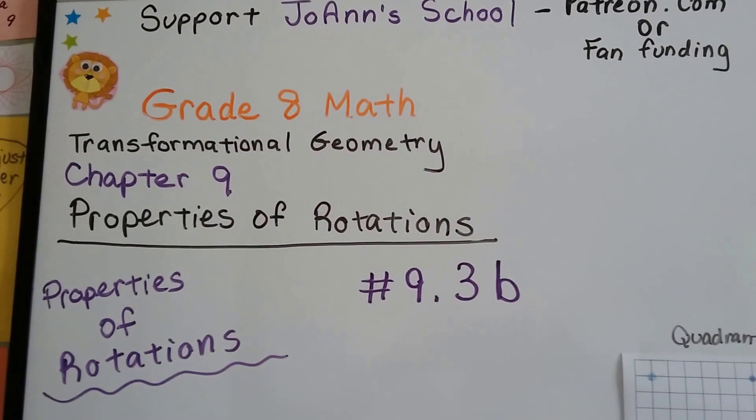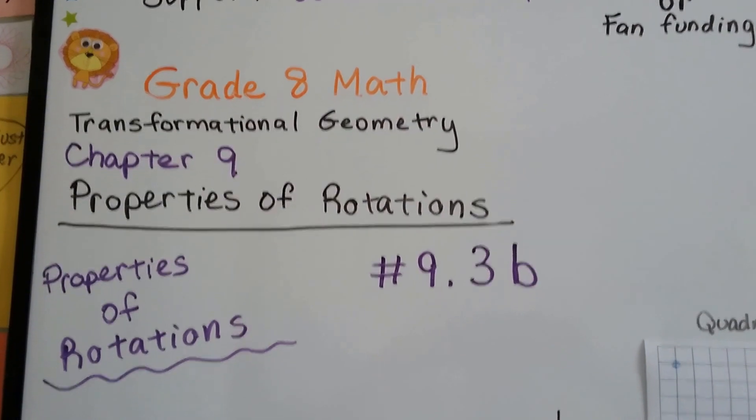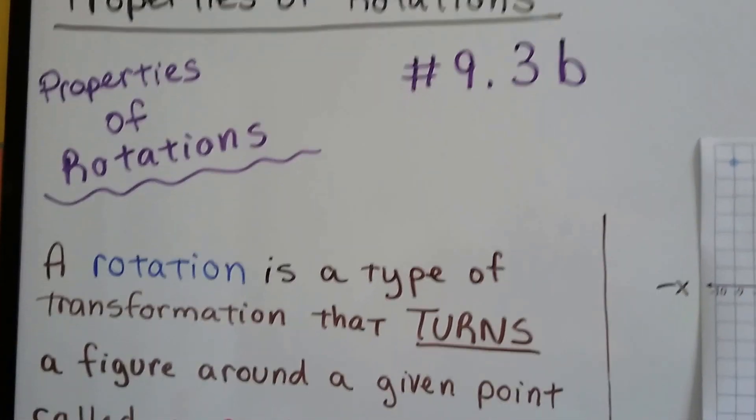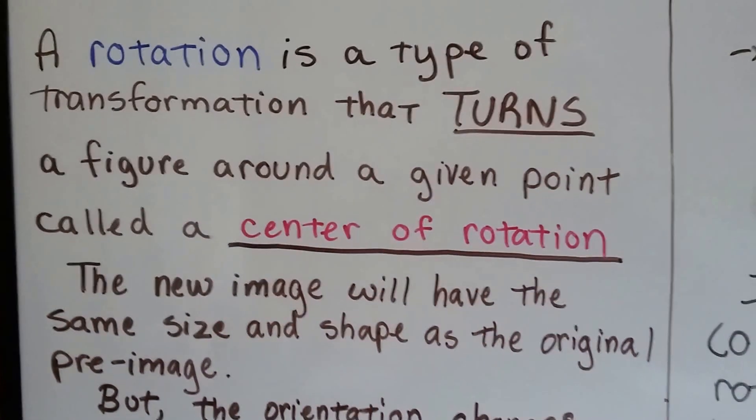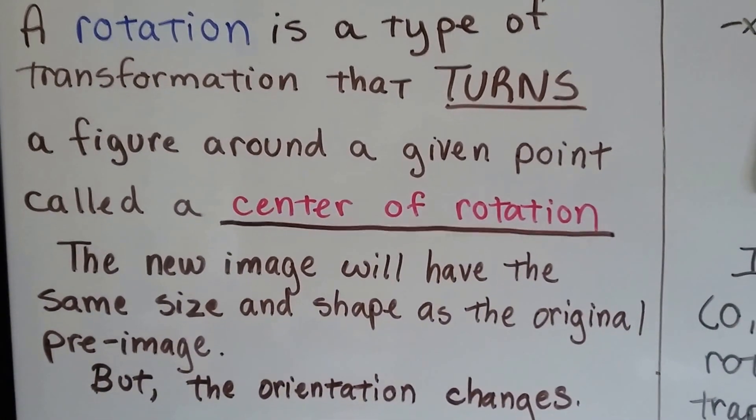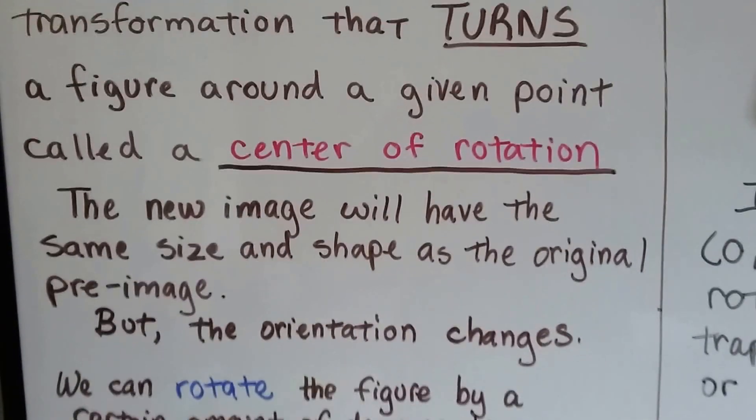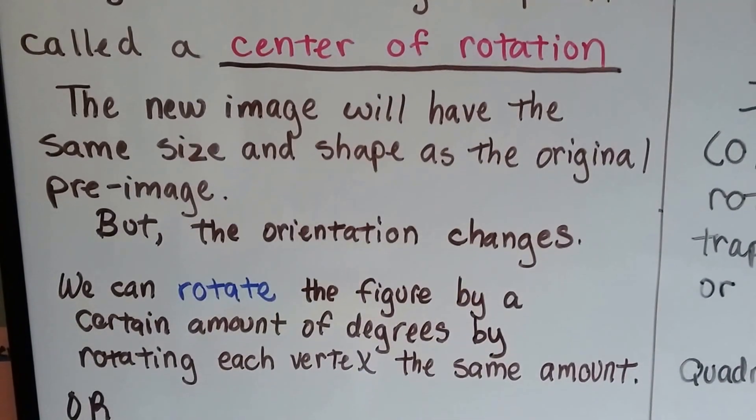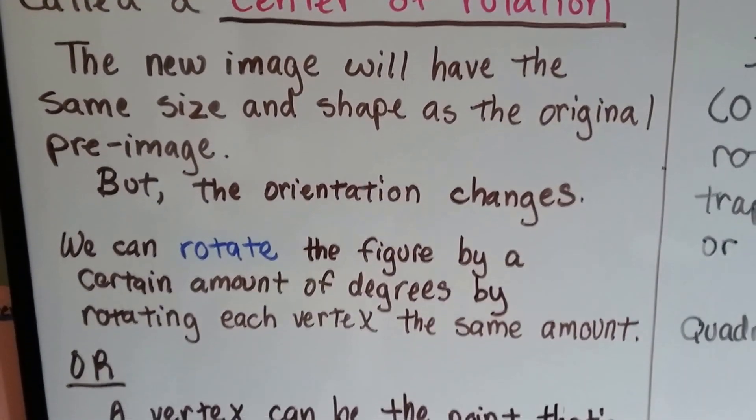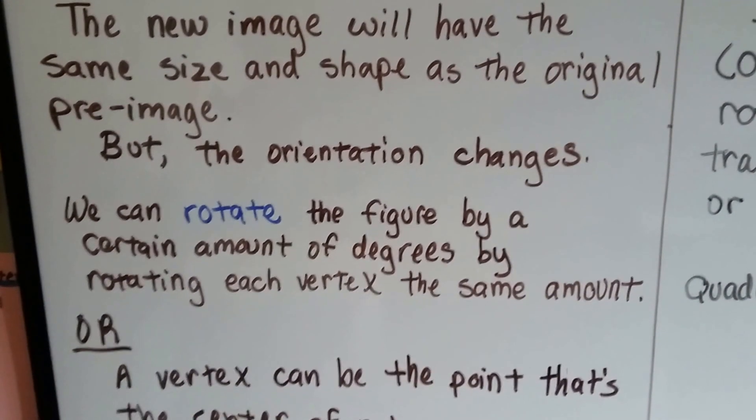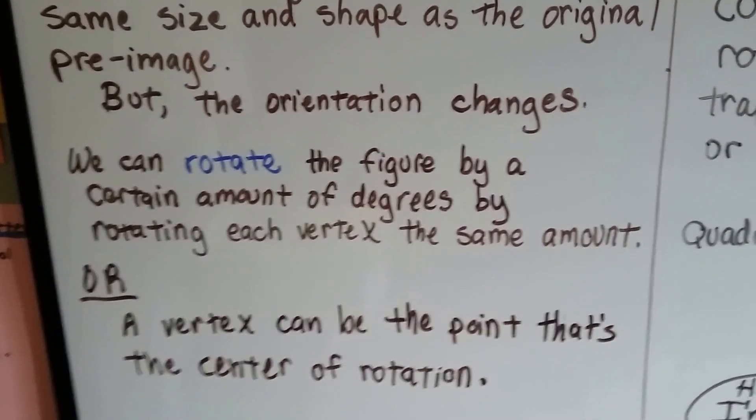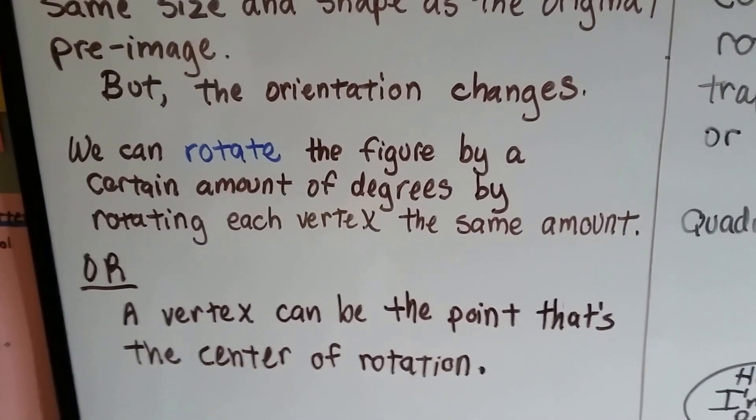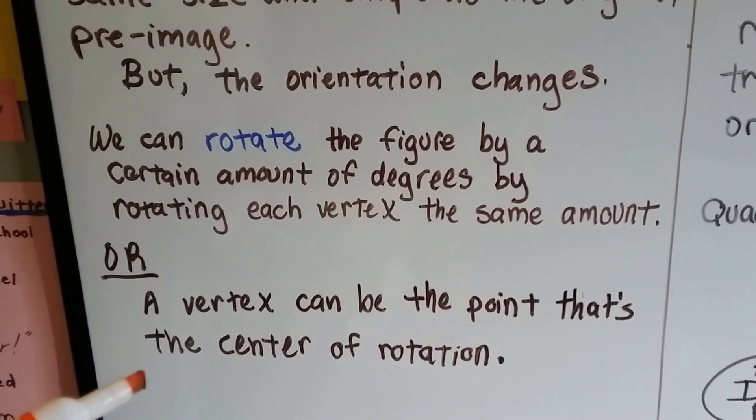Grade 8 math number 9.3b, Properties of Rotations. We talked in the last video about what a rotation is and how it's a type of transformation that turns a figure around a given point called the center of rotation. The new image will have the same size and shape as the original pre-image, but the orientation changes. We can rotate a figure by a certain amount of degrees by rotating each vertex the same amount, or we could have a vertex as the center of rotation.